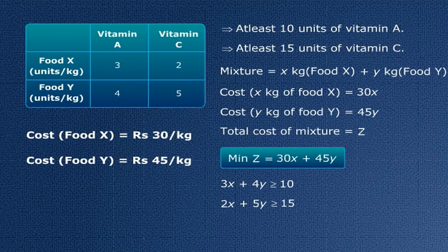So these two inequalities are the constraints of our linear programming problem. Also remember one thing: X and Y cannot be negative. So we have two more constraints: X is greater than or equal to 0 and Y is greater than or equal to 0.